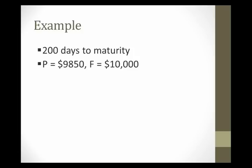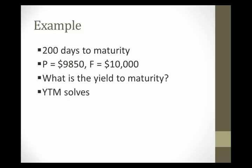Now let's look at an example for a zero coupon bond. So in my example, again, this is a short-term bond. It's going to have 200 days to maturity, a purchase price of $98.50, and a face value of $10,000. So we want to calculate what the yield to maturity is on the zero coupon bond.